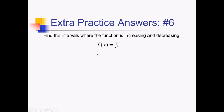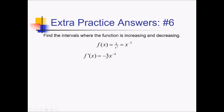For this one, we're trying to figure out where 1 over x cubed is increasing and decreasing. Let's start by rewriting this as x to the negative third power — to figure out this question I need the derivative and its behavior. Using the power rule, we've got negative 3x to the negative 4. I'm going to find critical values, but let me rewrite this first as negative 3 over x to the fourth.